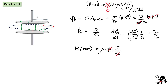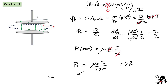Substituting into Ampere's law: the left-hand side is B times 2 pi r, and the right-hand side is mu zero times the displacement current, which is epsilon zero times current divided by epsilon zero. The epsilon zeros cancel, and we get B equals mu zero times I divided by 2 pi r, valid when r is bigger than the plate radius. This expression looks exactly like the field produced by a wire — it's the same formula you'd get for a current-carrying wire at distance r.